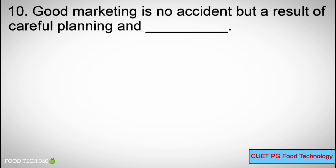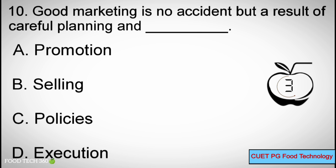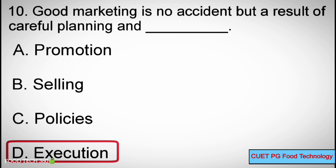Q10. Good marketing is no accident but a result of careful planning and ___. Options: A. Promotion. B. Selling. C. Policies. D. Execution. Correct answer: D. Execution.